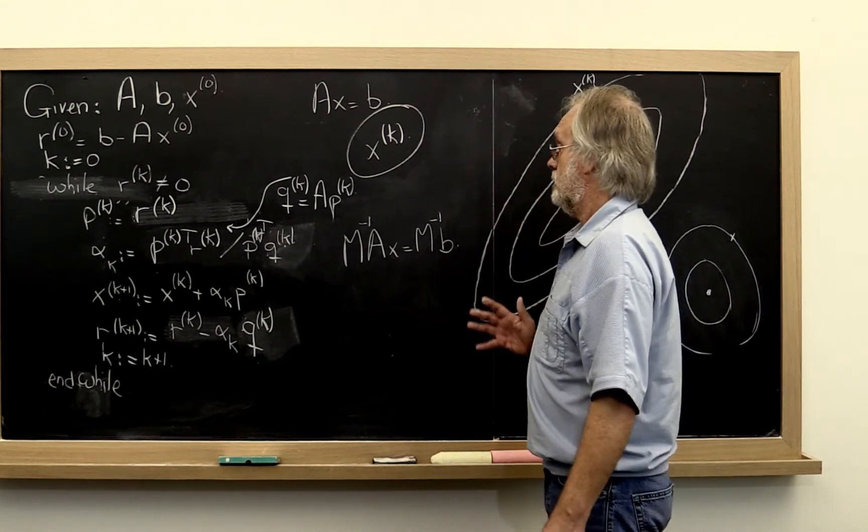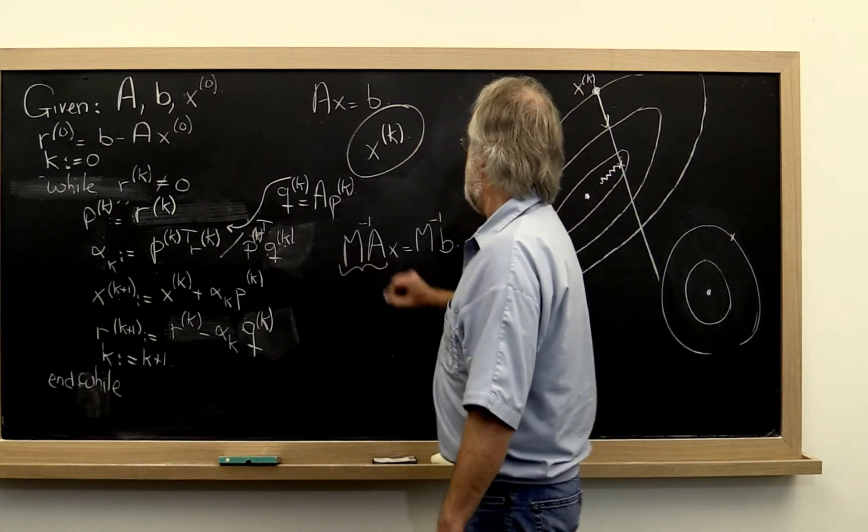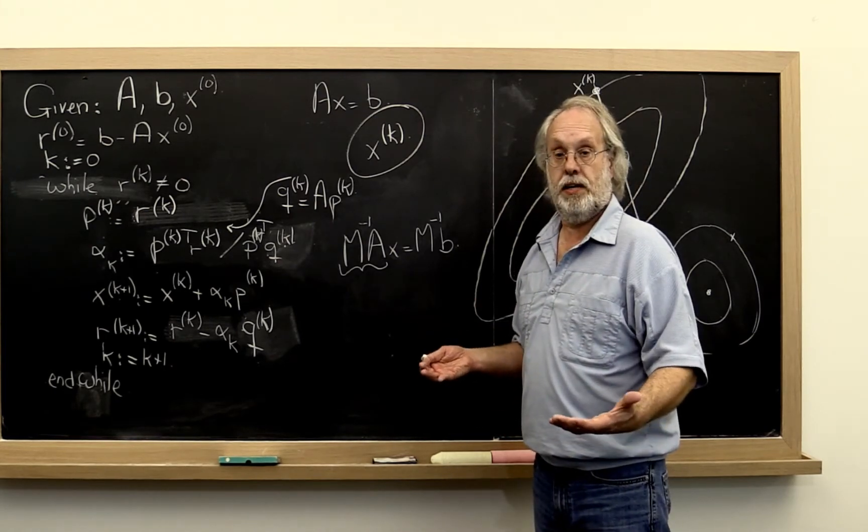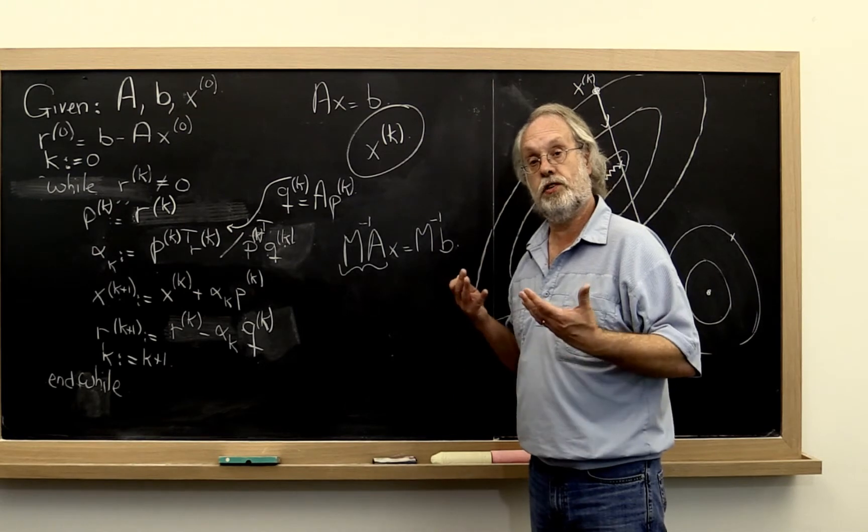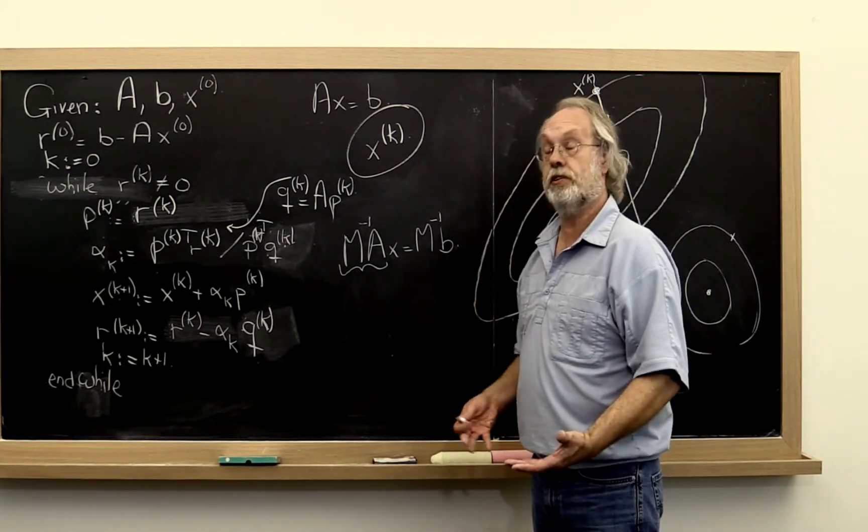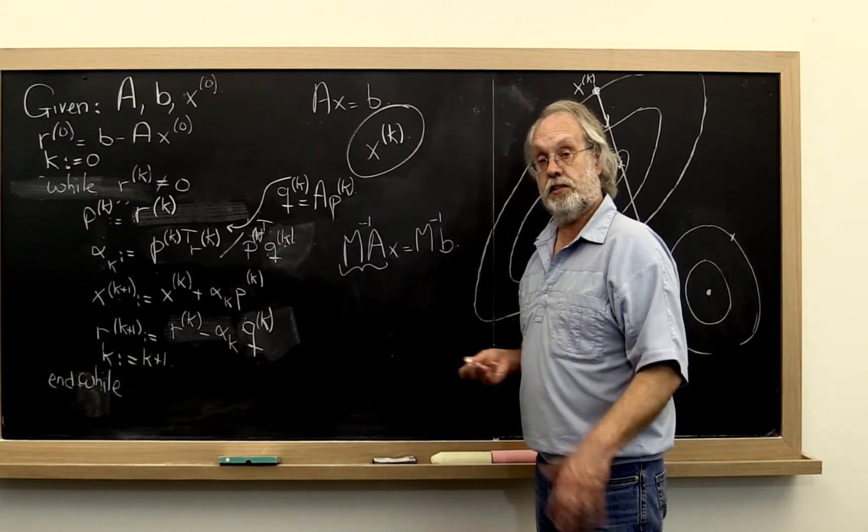However, there remains a problem. And that is, this matrix may not be symmetric positive definite. And all of the discussion we've had so far is for symmetric positive definite matrices. So then either we need to generalize our theory to matrices that are not symmetric positive definite or we need to fix this.